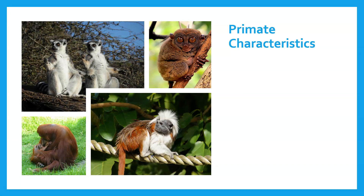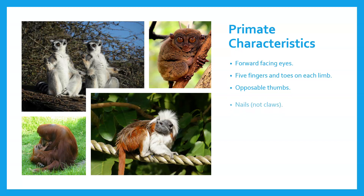In terms of the characteristics that primates all share: they have forward-facing eyes, which means they can see out in front of them but have to turn to see anything behind or around them — unlike a fly, which can see 360 degrees. Primates also have five fingers and toes on each limb, opposable thumbs, nails rather than claws, and generally a large brain for their body size.